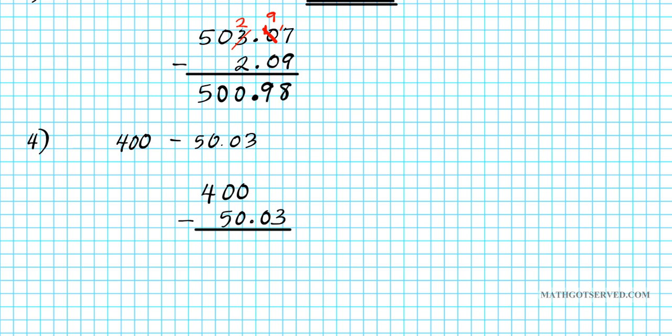Now, if you notice, we have a situation here. There is nothing above .03. So what are we going to do? Well, we just put in the decimal point and then we add our placeholders, which are zeros.